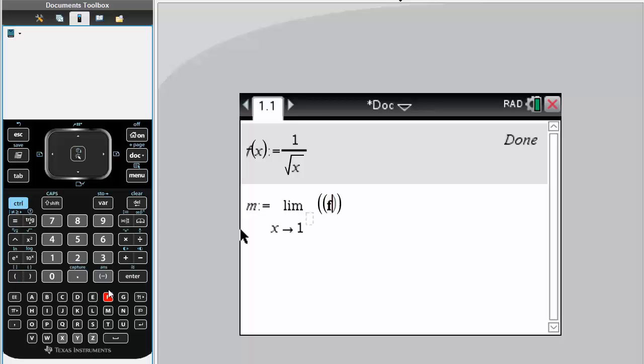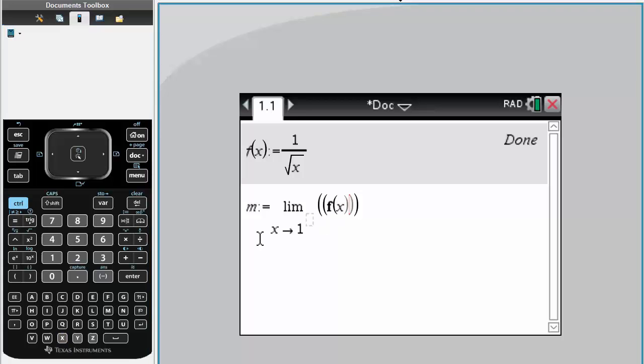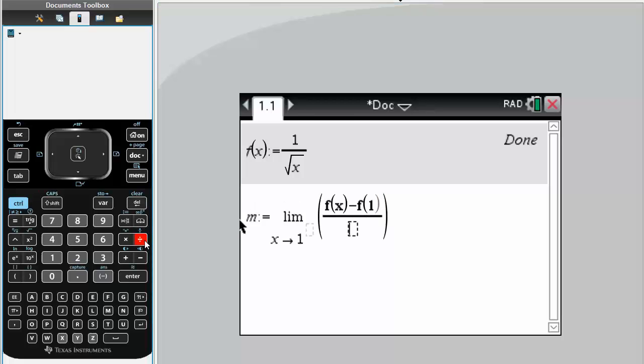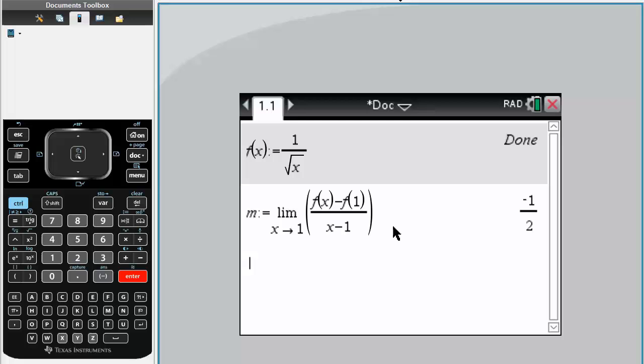...which is f(x) minus the value we get when we have 1 for f(x). Put 1 here, and this is all divided by (x - 1). Hit enter, and that is the slope of the tangent.